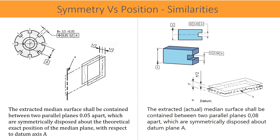Let us find the similarities between position and symmetry tolerances. Both figures and definitions are referred to GD&T standard ISO 1101. The comparison is shown for a rectangular slot feature. In both cases, extracted actual median surfaces are contained between two parallel planes with a given tolerance value apart, and these two parallel planes are symmetrically disposed about the datum. Therefore, both definitions are exactly the same, and we can say that position and symmetry tolerances are the same when basic dimensions are zero.